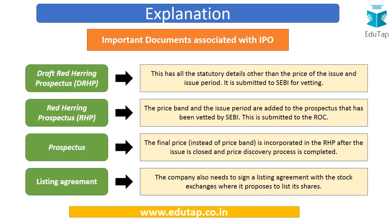The important documents associated with the IPO process include the Draft Red Herring Prospectus, which is especially important in the case of a book-built issue. It contains all statutory details other than the price of the issue. The Red Herring Prospectus is when the price band and the issue period are added to the DRHP approved by SEBI and it is submitted to the Registrar of Companies.